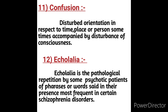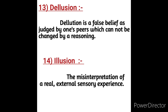Delusion is a false belief, as judged by one's peers, which cannot be changed by reasoning. Delusion, illusion, and hallucination all involve false perceptions. A delusion is something believed to be true or real that is actually false and unreal. Illusion is the misperception of a real external sensory experience — a misleading image presented as a visual stimulus.